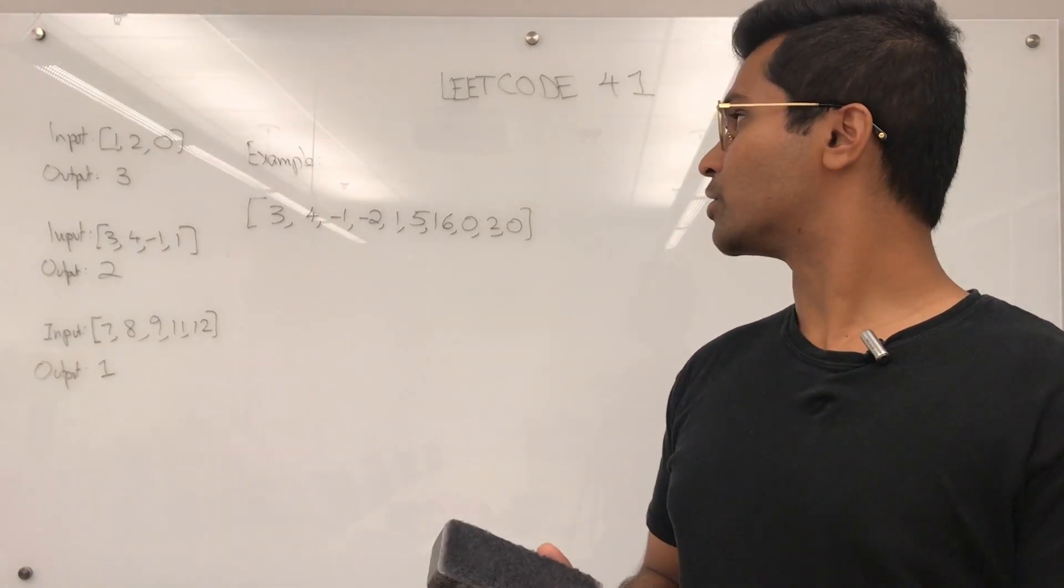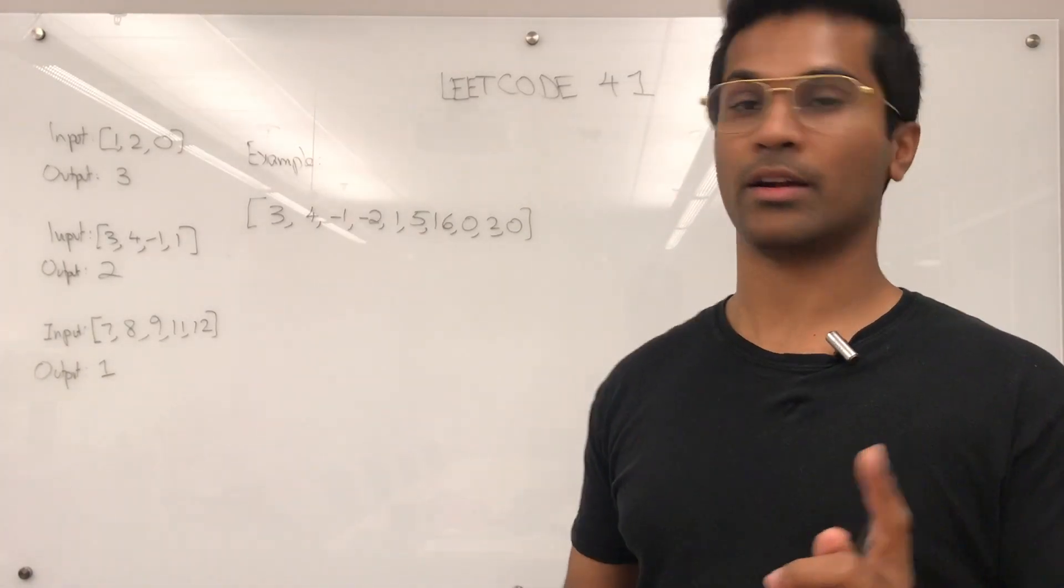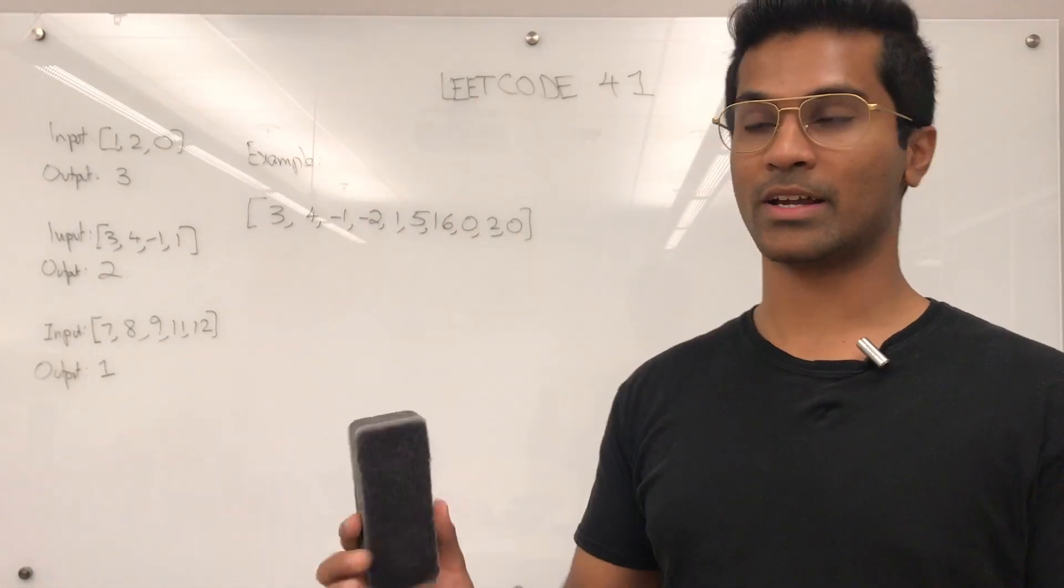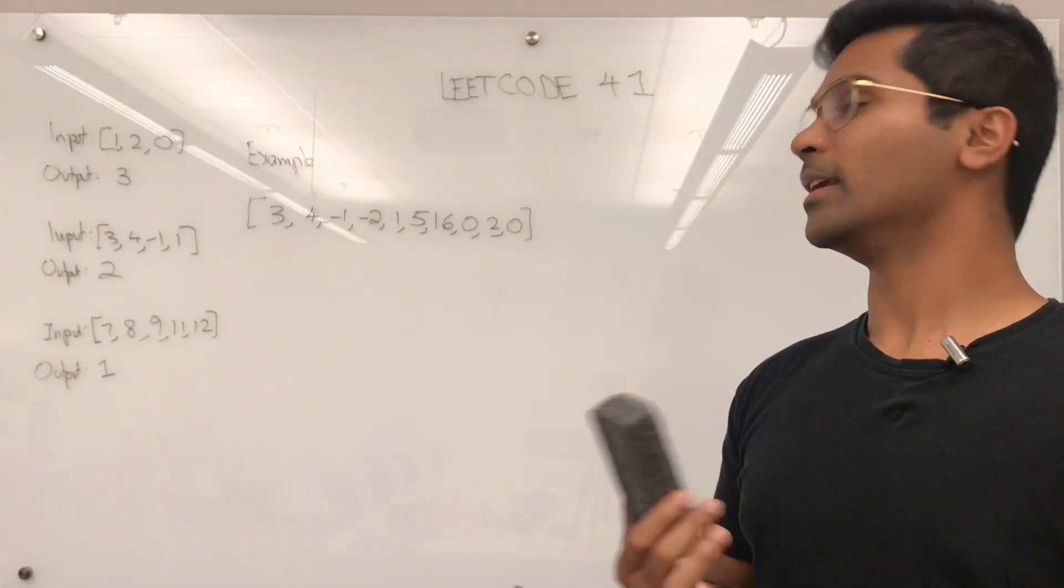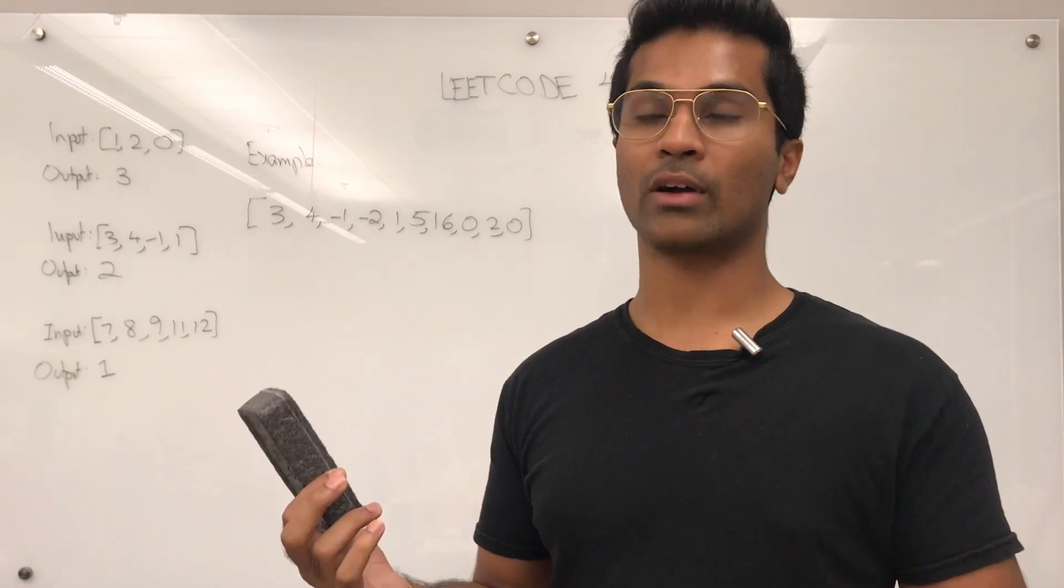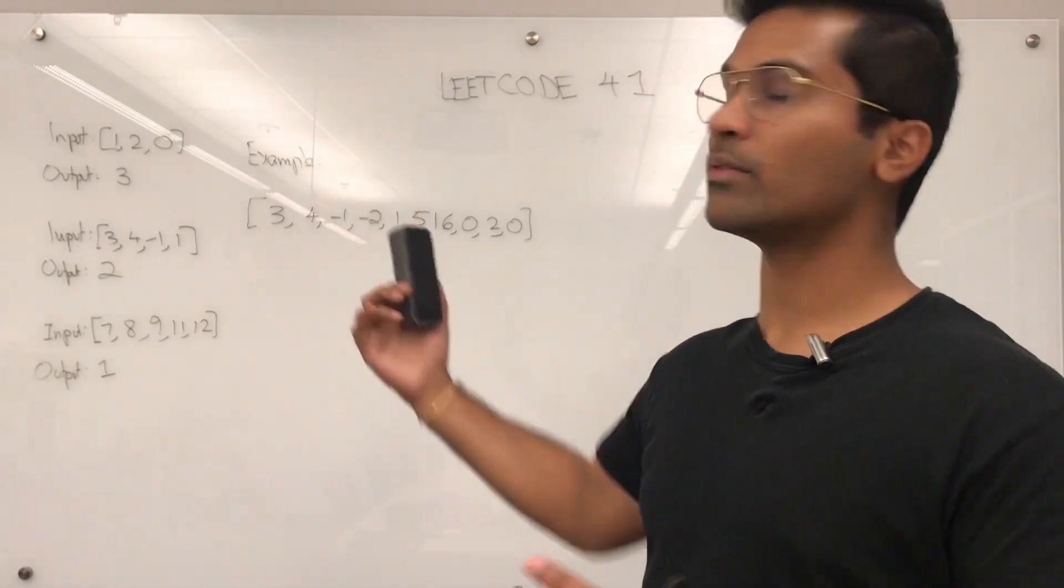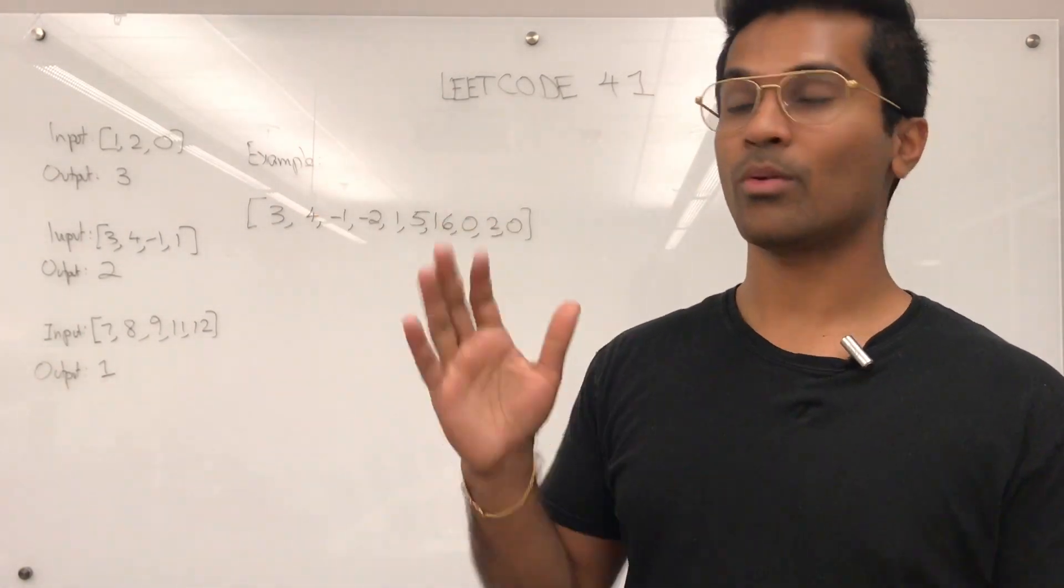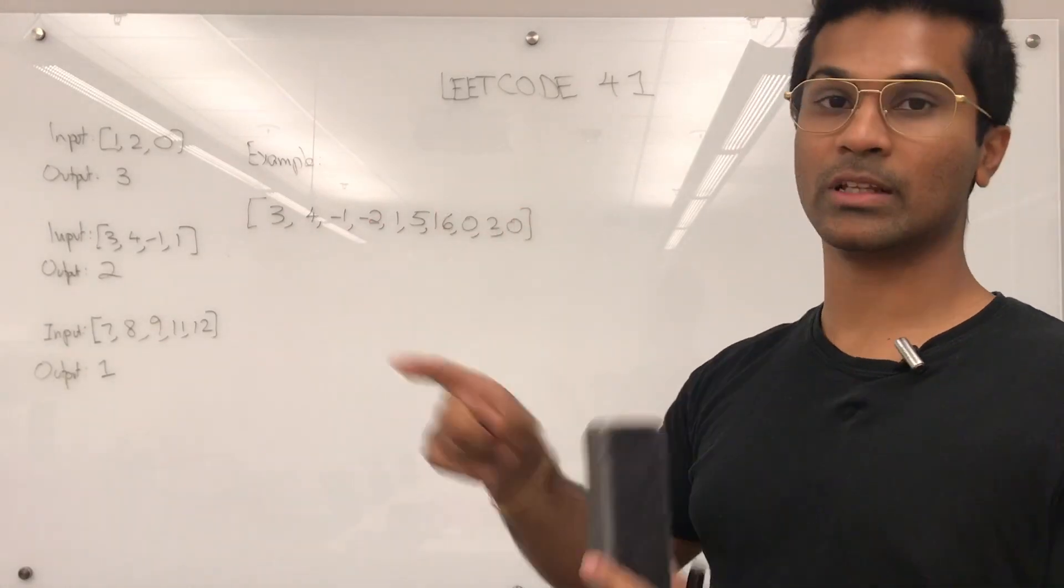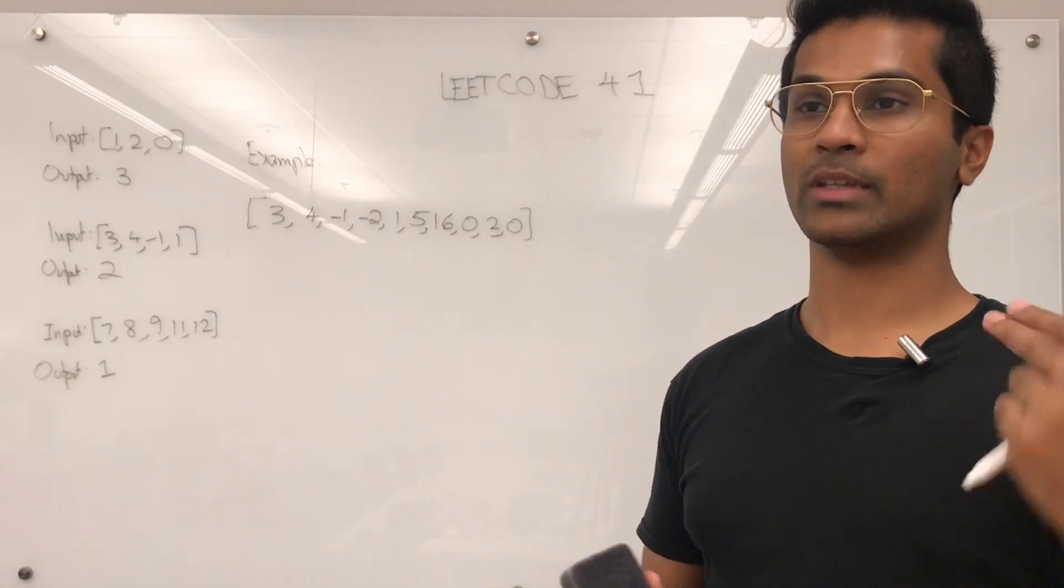There's going to be a couple steps. First, we have to check if the number 1 exists in the array or not. If it doesn't, then we return 1. Next, what we have to do is filter out every number which is a negative or a 0 or greater than n, which is the length of the array.